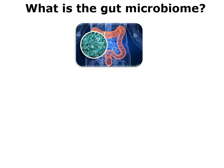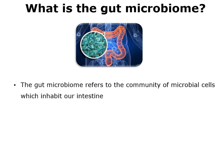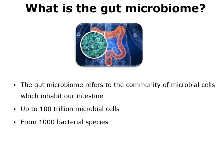Talking specifically about the gut microbiome — exact numbers are hard to say, these are really estimates — the gut microbiome is specifically the community of microbial cells which inhabit our intestine. It is estimated this could be up to 100 trillion microbial cells, coming from around 1,000 bacterial species, which are thought to encode for around 5 million genes.